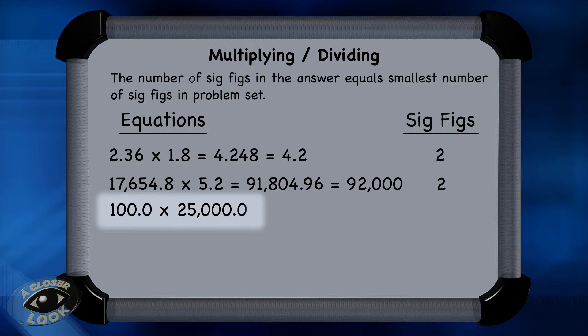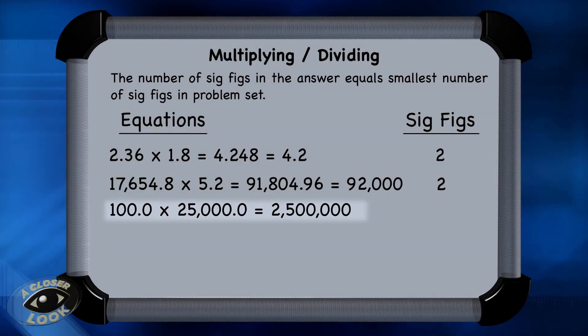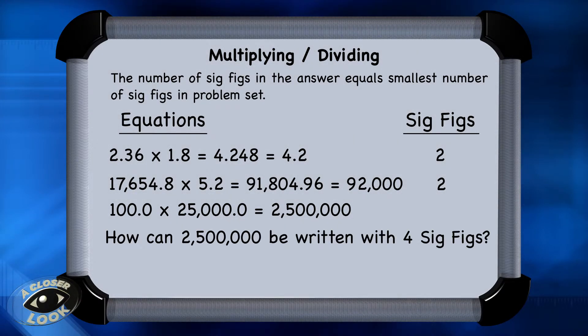And now let's look at 100.0 times 25,000.0. So the 100.0 has four sig figs, and 25,000.0 has six sig figs. So all those zeros count because of the decimal point. Since 100.0 has four sig figs, this answer, 2,500,000, would need to be rounded to four sig figs. The best way to do this would be using scientific notation. So it would be 2.500 times 10 to the sixth.